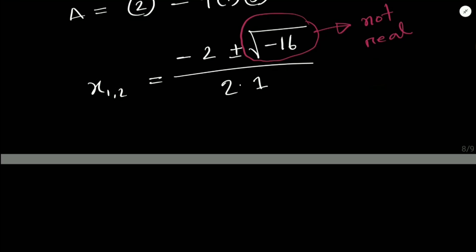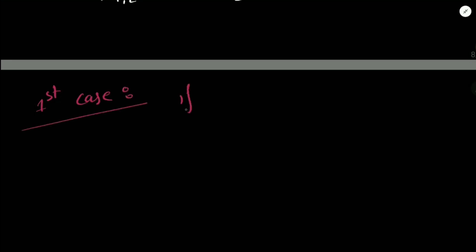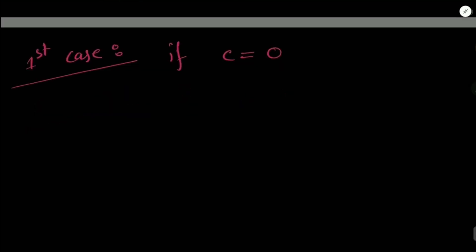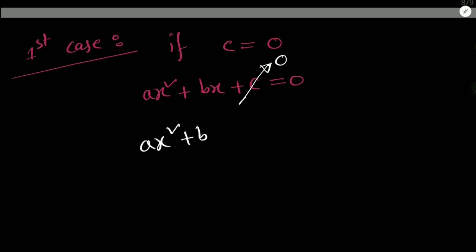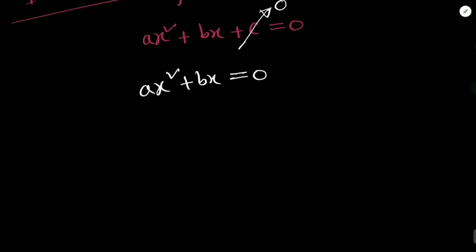Now let's discuss three special cases for quadratic equations. Special case one: if c = 0 — that is, if the quadratic equation has no constant term — the equation becomes ax² + bx = 0.